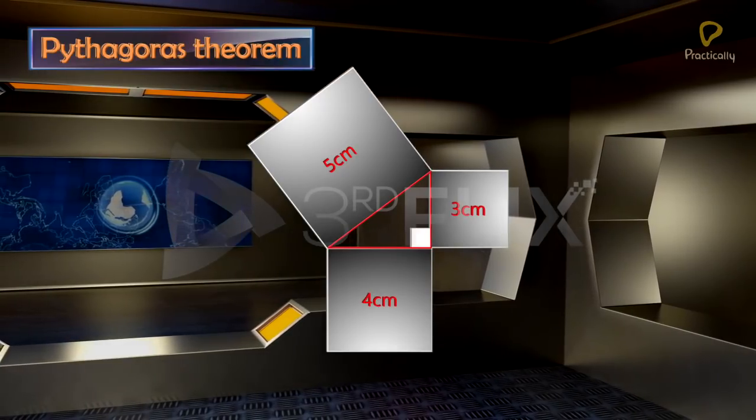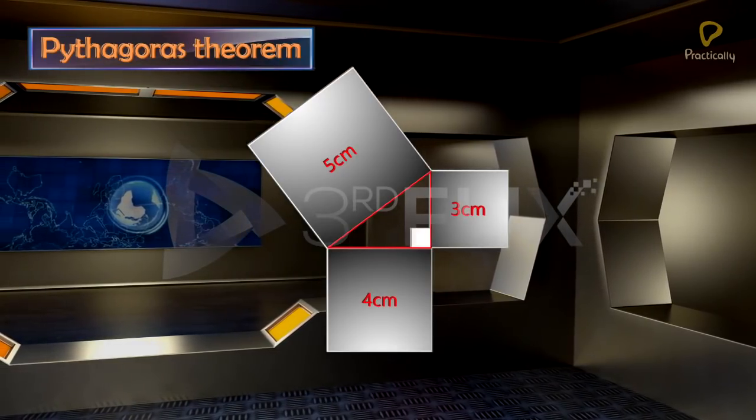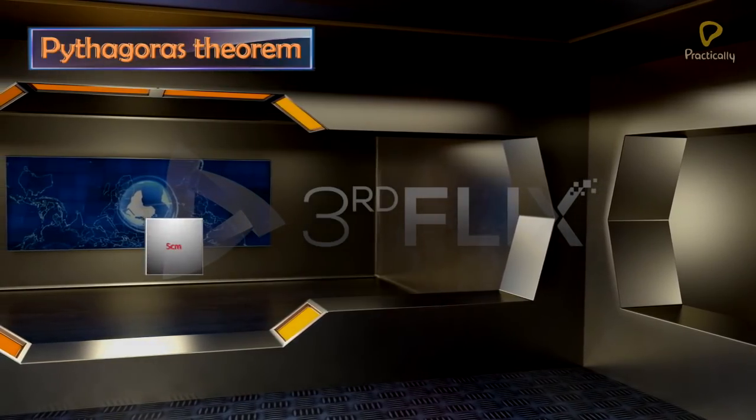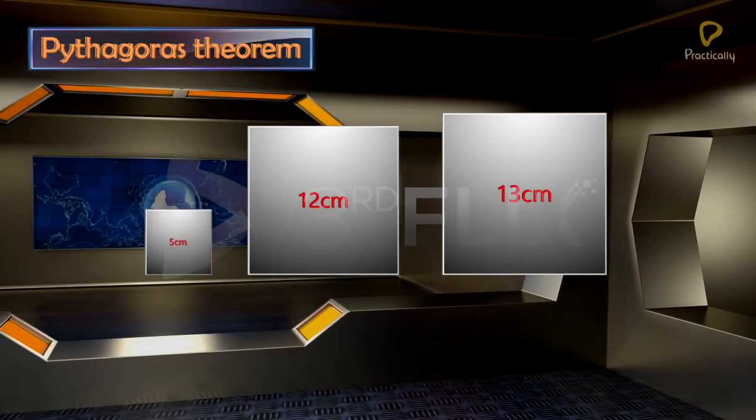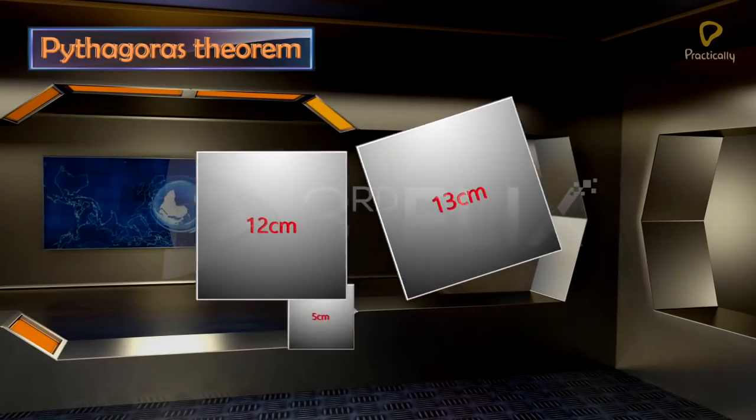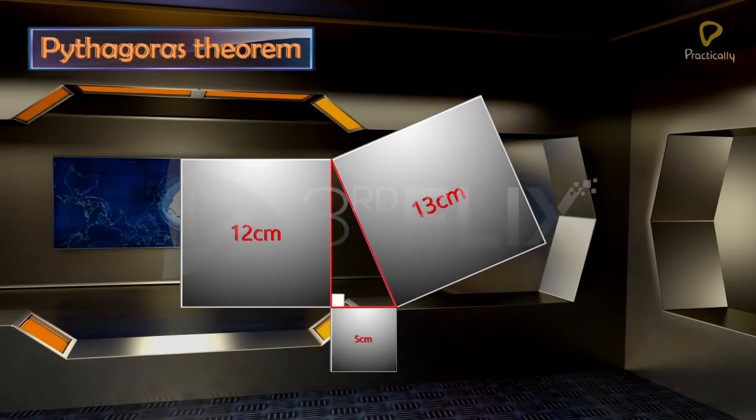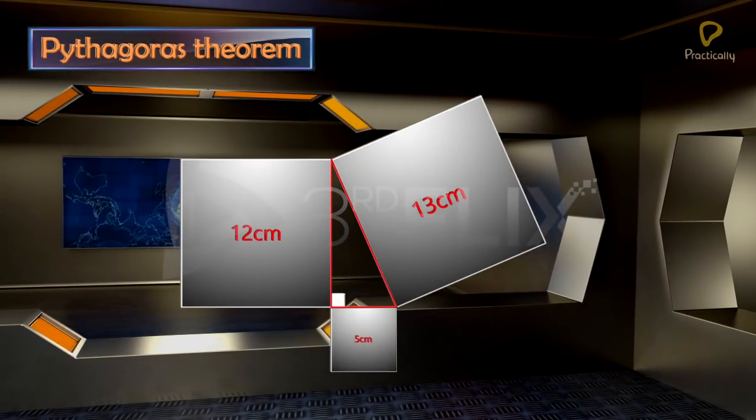Now repeat the same thing with squares of side lengths 5 cm, 12 cm, and 13 cm. Again, we get a right triangle. Hence, the converse is also true.